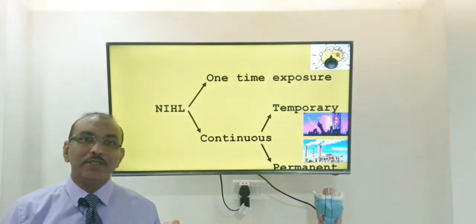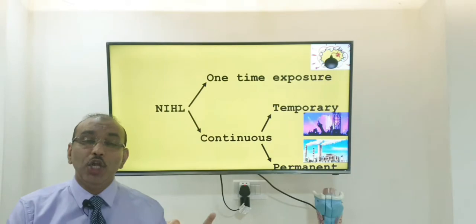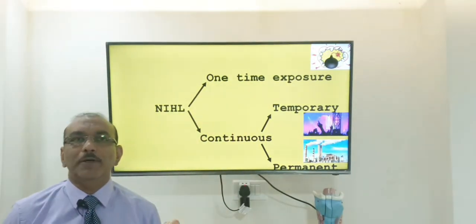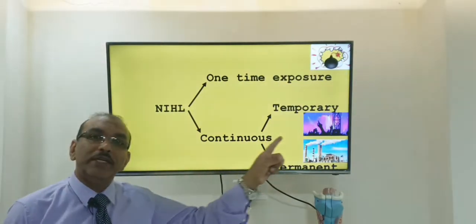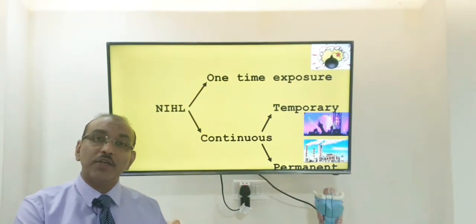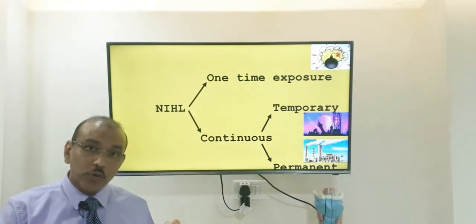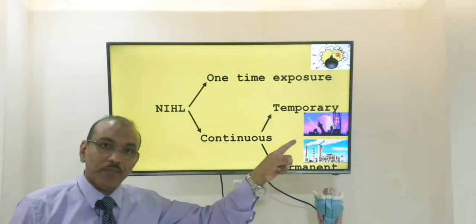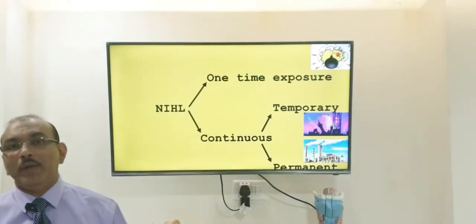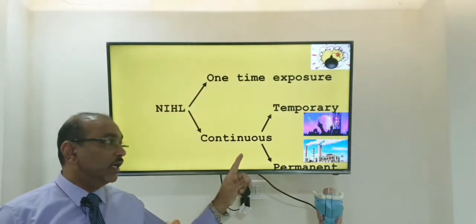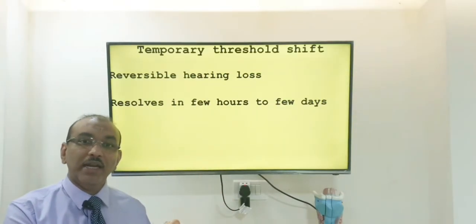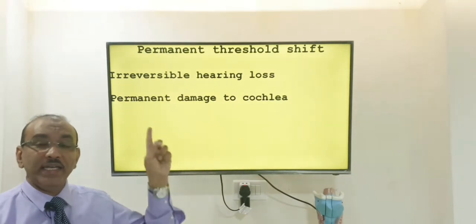Noise induced hearing loss can be classified as a one-time exposure, like a blast — for example, the explosion in the Beirut shipyard — called acoustic trauma. Or it can be continuous, either temporary or permanent. A short exposure causes little inner ear damage that can recover by itself, called a temporary threshold shift. But if a person is continuously exposed every day, they get a permanent threshold shift, which is irreversible and causes permanent ear damage.